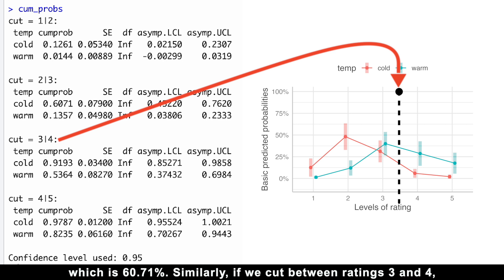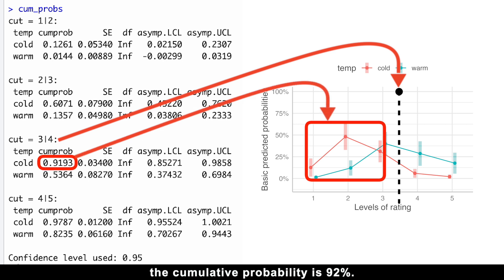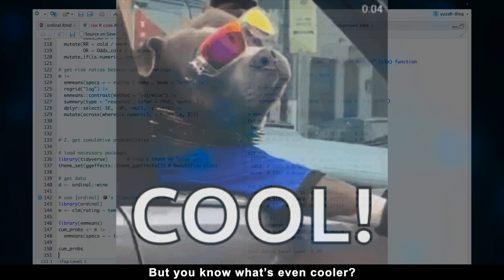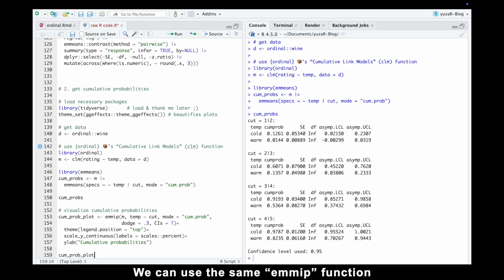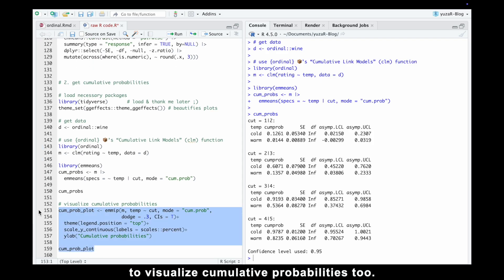Similarly, if we cut between ratings 3 and 4, the cumulative probability is 92%. This matches what we calculated manually by summing probabilities. Pretty cool, right?